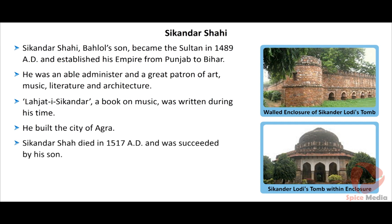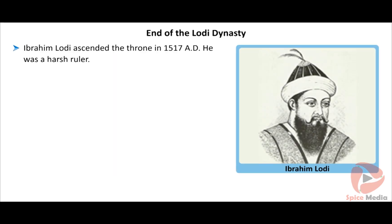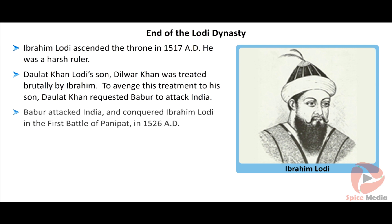Balol Lodi died in 1489 AD and was succeeded by his son. Sikandar Shahi, Balol's son, became the Sultan in 1489 AD and took on the title Sikandar Shah. He was the most powerful Sultan of the Lodi dynasty. He established his empire from Punjab to Bihar. He was a devoted Muslim and restricted Hindus. Sikandar Shahi was an able administrator who set up an effective system and improved agriculture and industry. He was a great patron of art, music, literature and architecture.